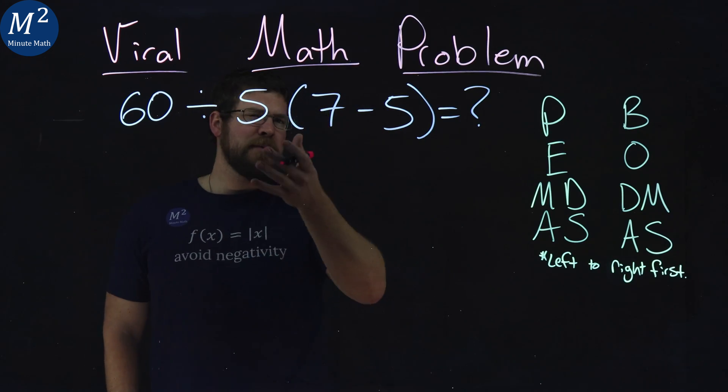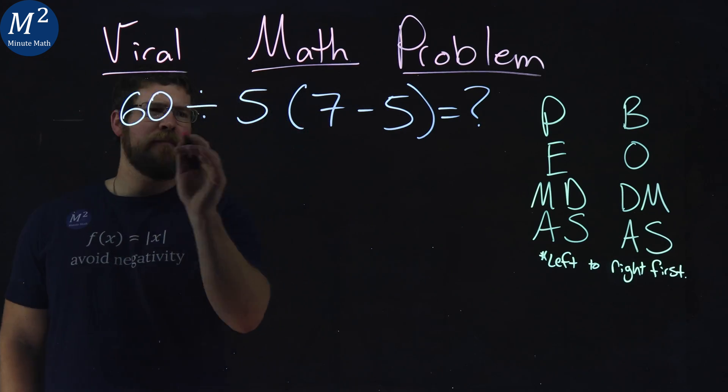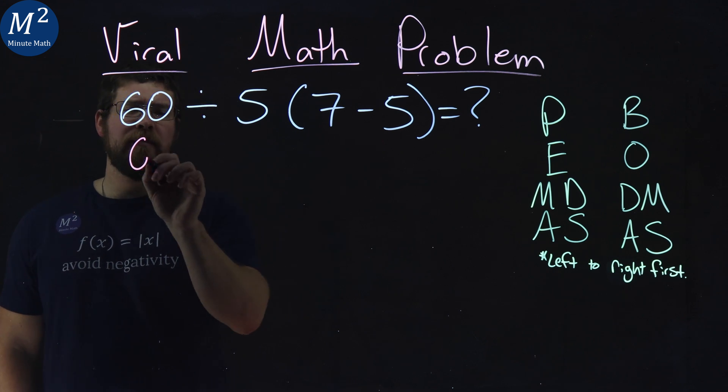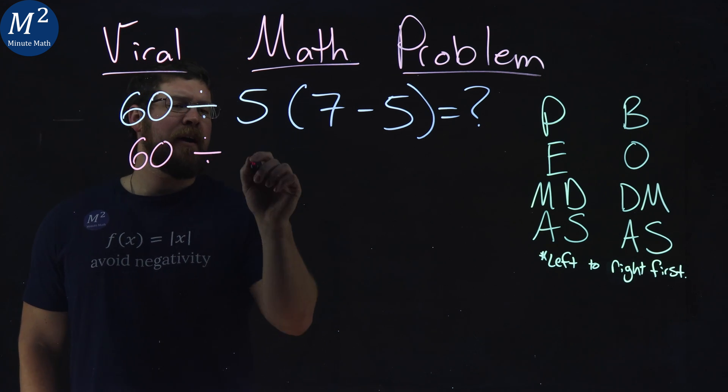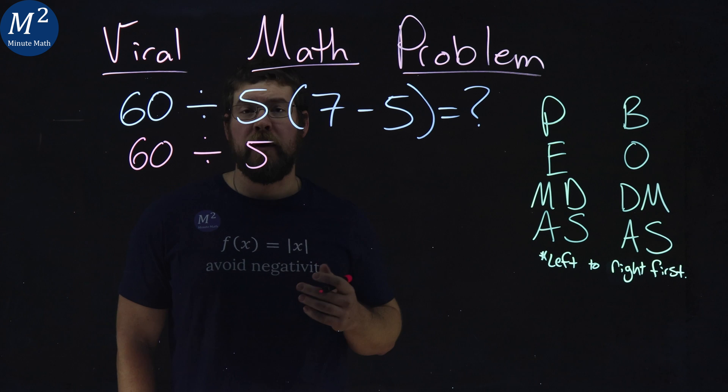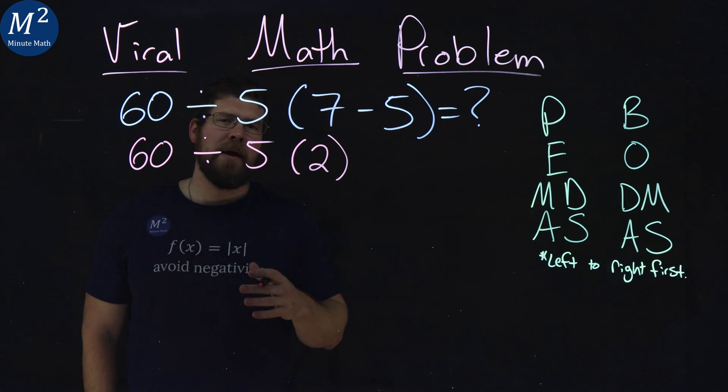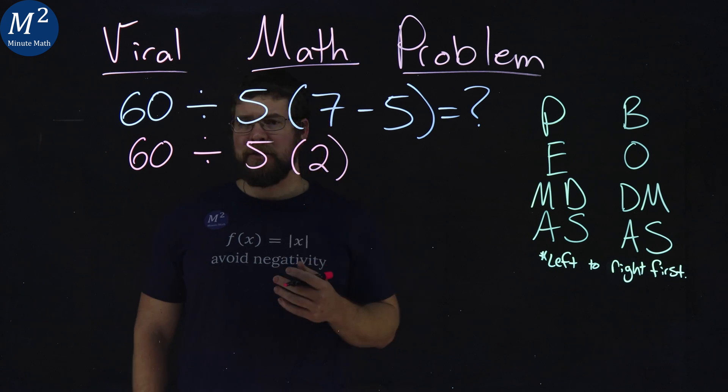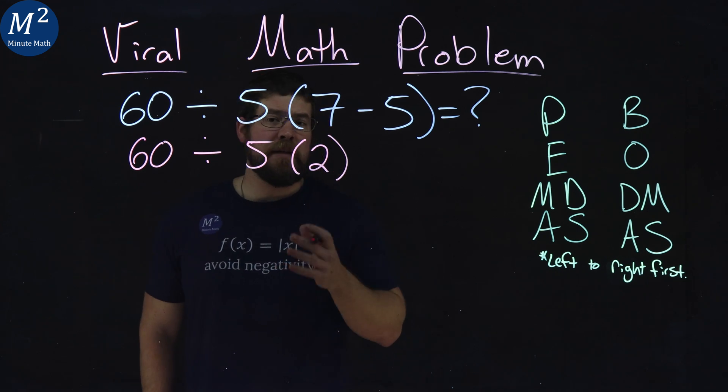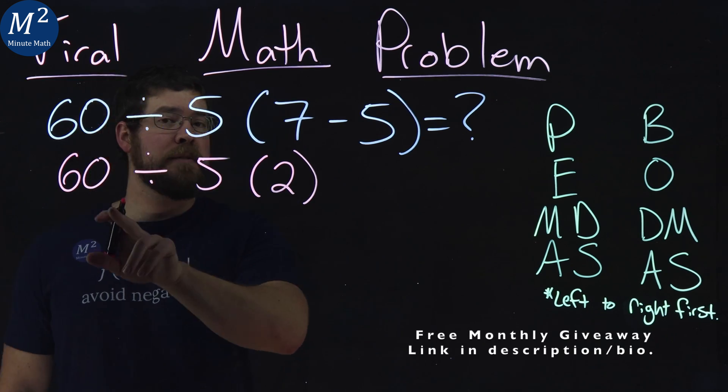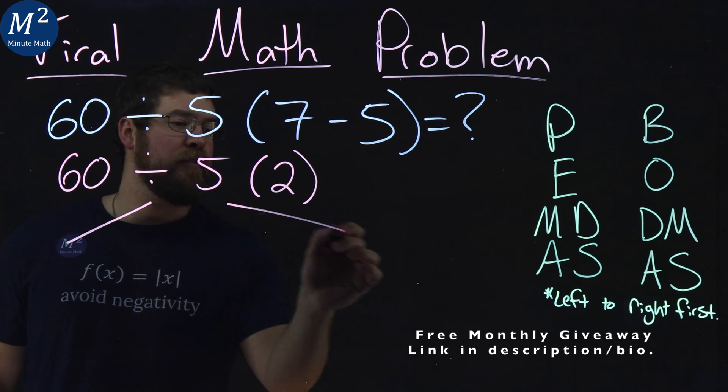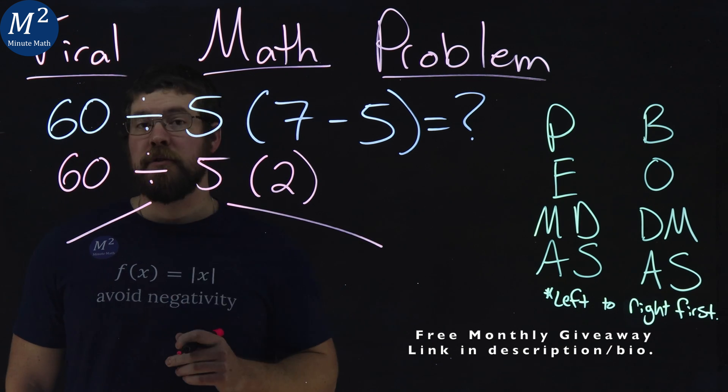So this is where we will simplify this. We have parentheses first, so we have 60 divided by 5 times, well, 7 minus 5 is 2. And this is where we have two different factions here. Some people will treat this division first, we do 60 divided by 5 first. And some will do 5 times 2 first.